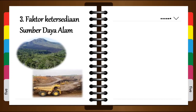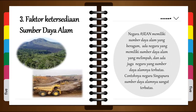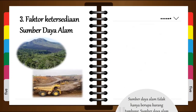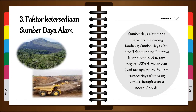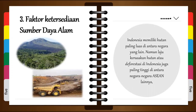Yang ketiga adalah faktor ketersediaan sumber daya alam. Negara ASEAN memiliki sumber daya alam yang beragam. Ada negara yang memiliki sumber daya alam yang melimpah, dan ada juga negara yang sumber daya alamnya terbatas, salah satu contohnya adalah negara Singapura. Sumber daya alam tidak hanya berupa barang tambang. Sumber daya alam hayati dan non-hayati lainnya dapat dijumpai di negara-negara ASEAN. Hutan dan laut merupakan contoh lain sumber daya alam yang dimiliki hampir semua negara ASEAN. Salah satu contohnya adalah Indonesia yang memiliki hutan paling luas di antara negara-negara lain, namun laju kerusakan hutan atau deforestasi di Indonesia juga paling tinggi di antara negara-negara ASEAN lainnya.